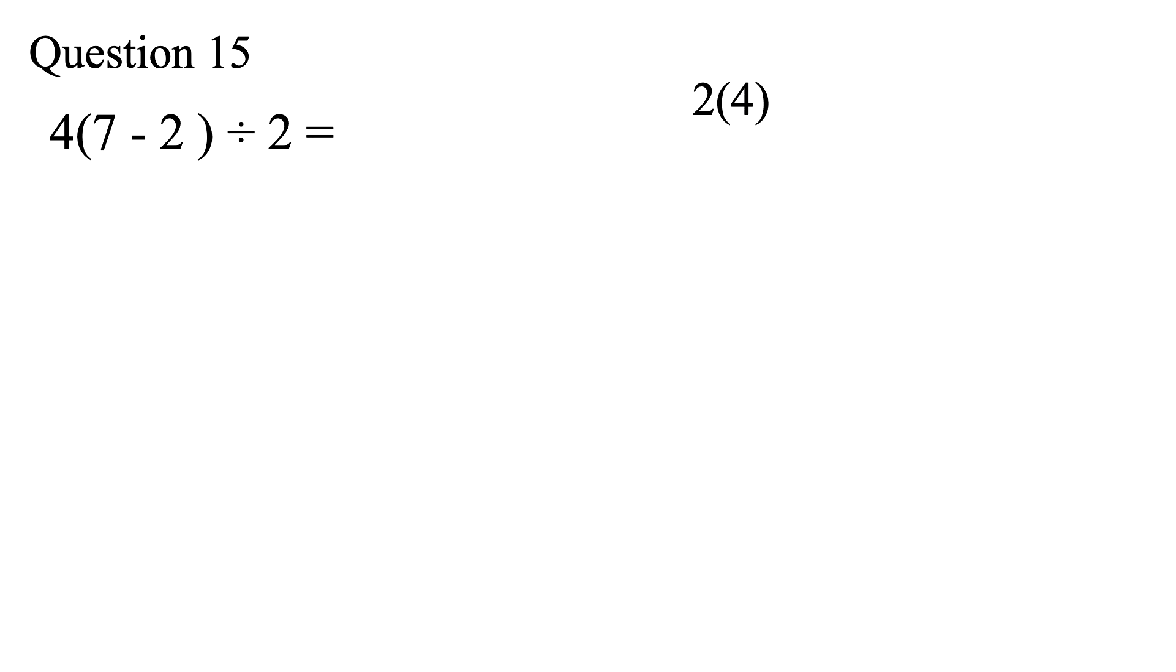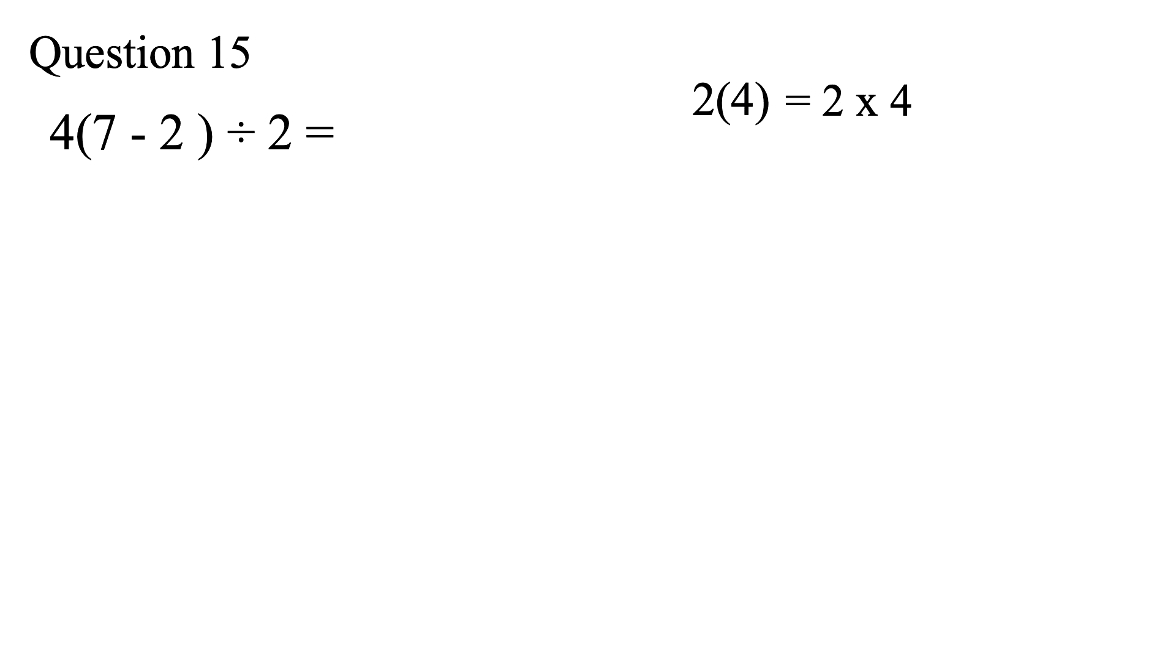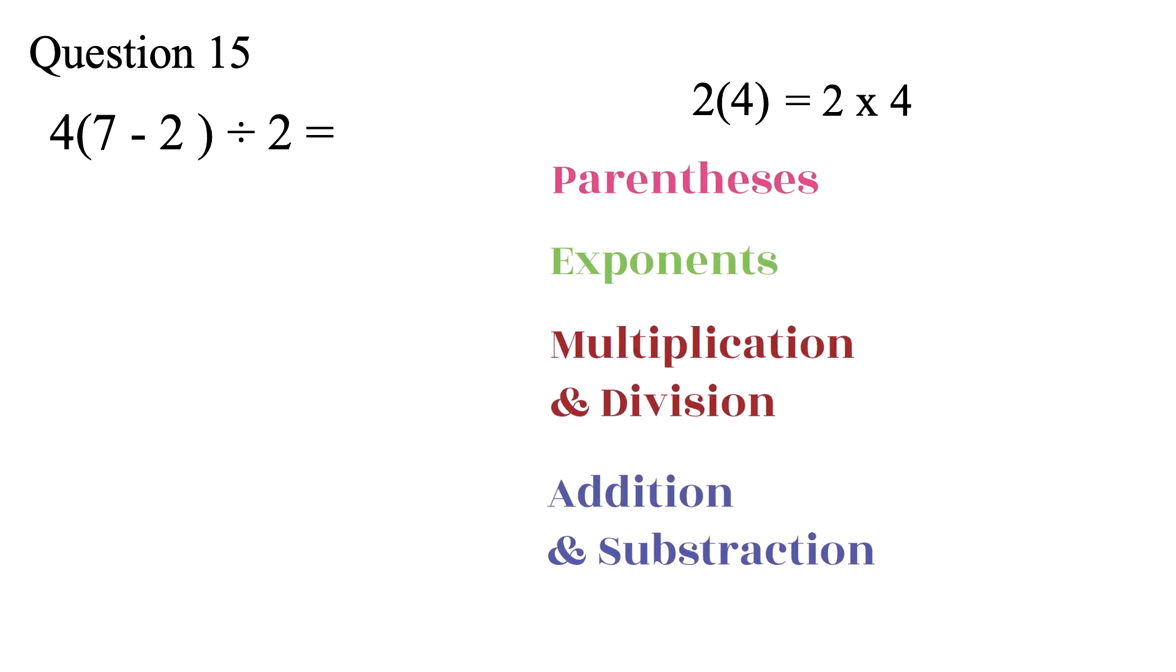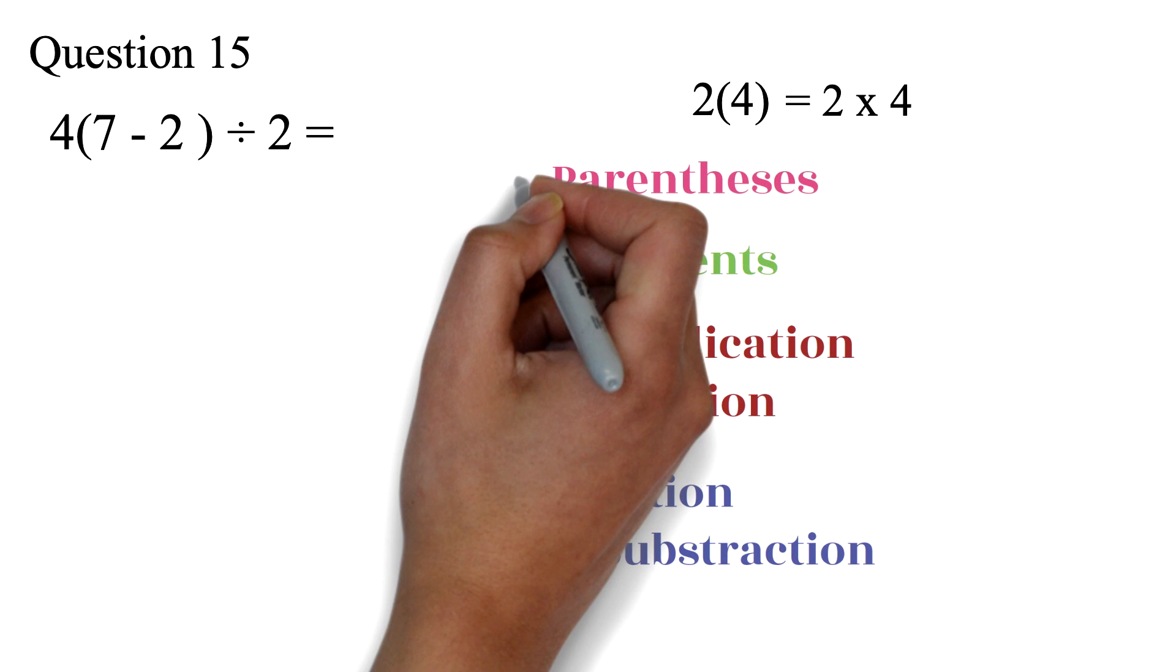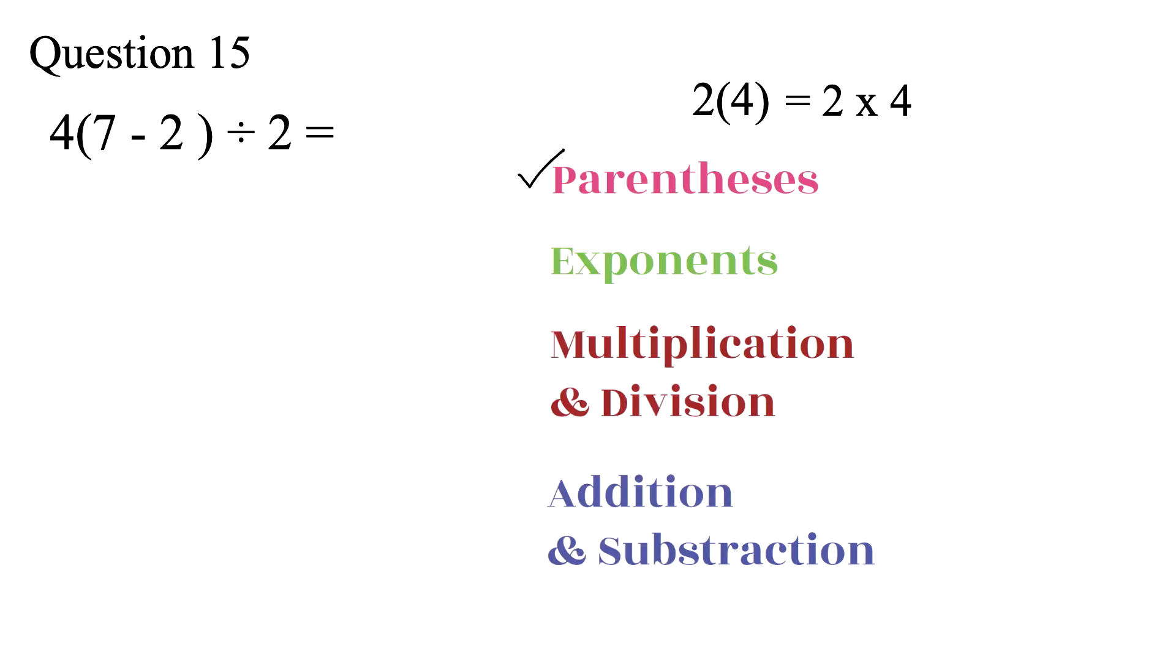Let's bring the order of operation. Looking at this question, we will perform the operation in parentheses first. So, we have 7 minus 2, which is 5.